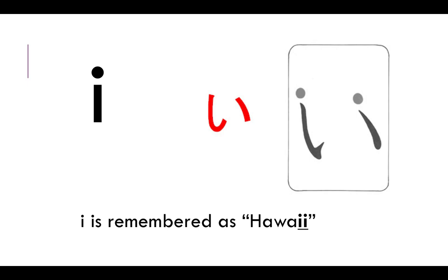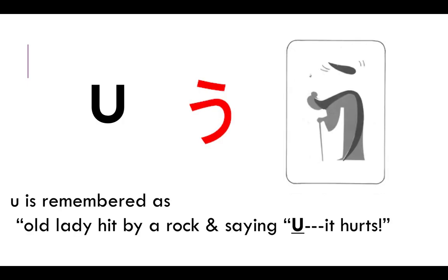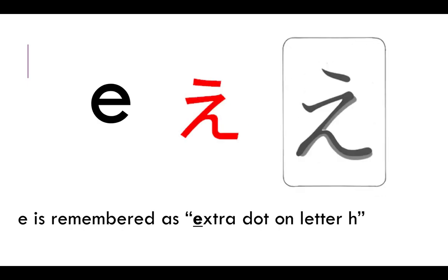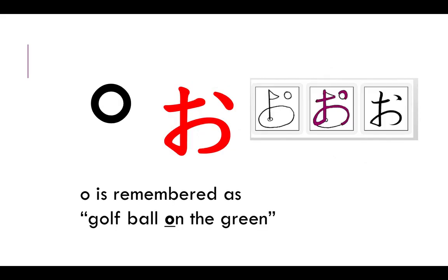For example, 'i' is remembered as 'hawaii'. We have u, e, o.